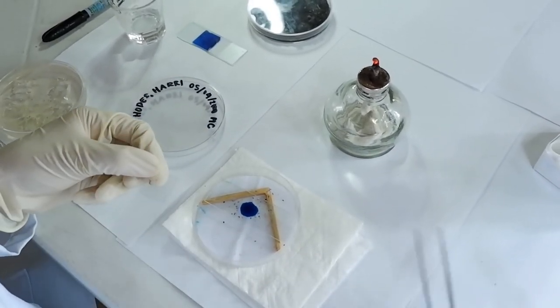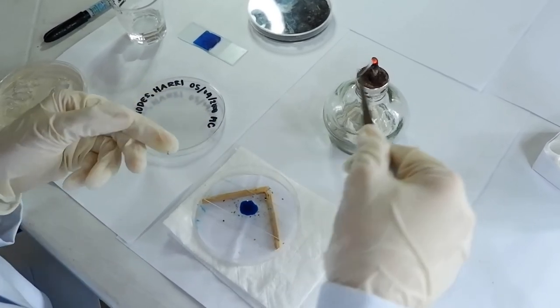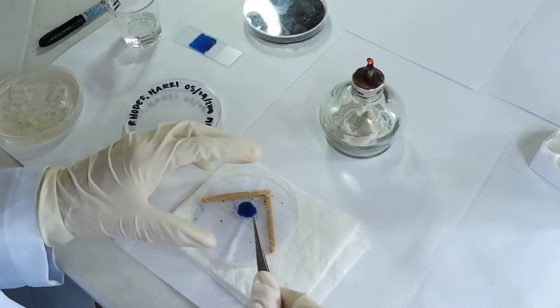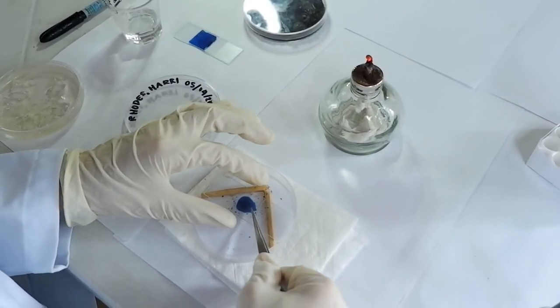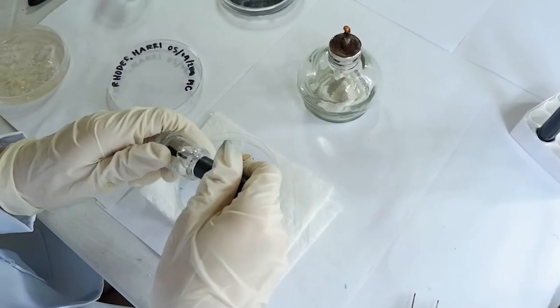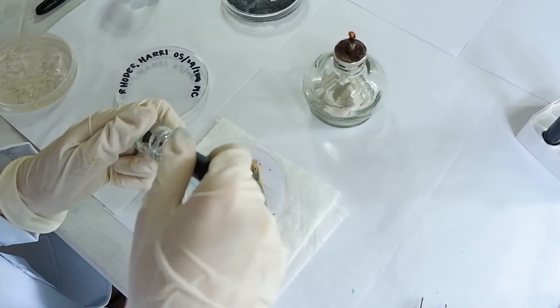Slowly place a sterile cover slip and avoid bubble formation. Do not apply force on the cover slip. Now place nail polish as indicated in the previous step.